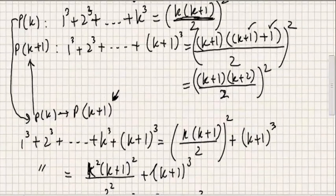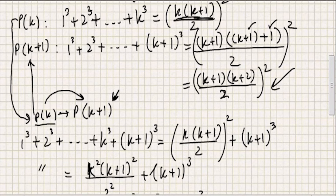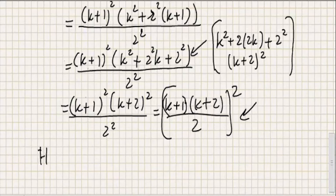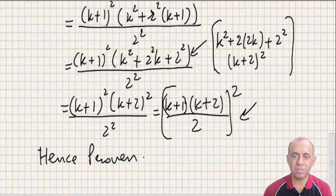This is the same as the right-hand side of P(k+1). So assuming P(k) is true, we have reached P(k+1), which proves the theorem — hence proven. I hope you understood this concept and liked the video. If you did, please press like, and if you haven't subscribed yet, please do. Thanks for watching.